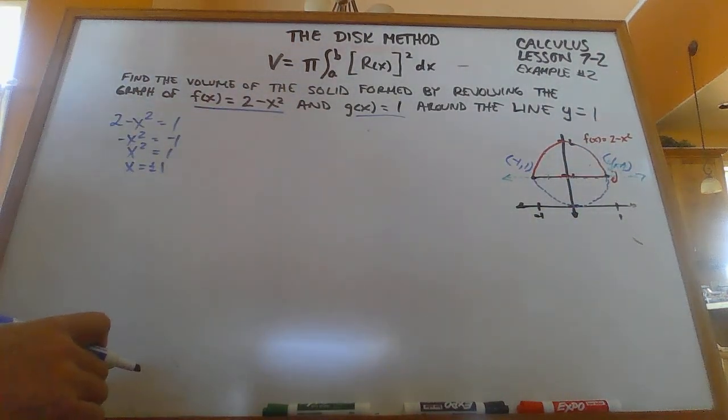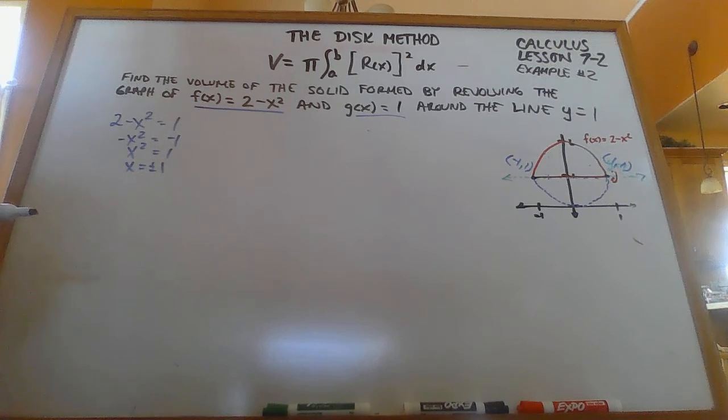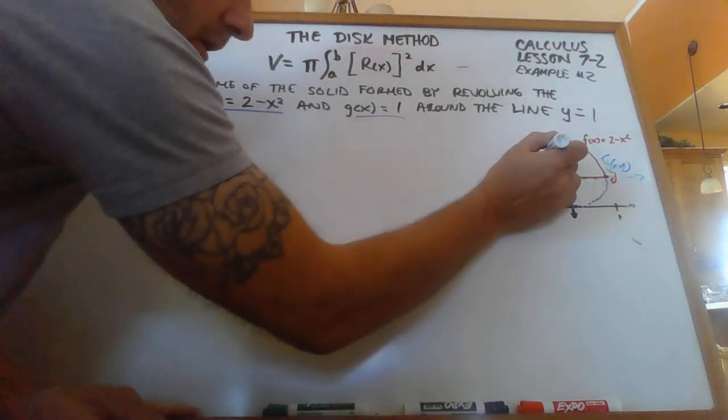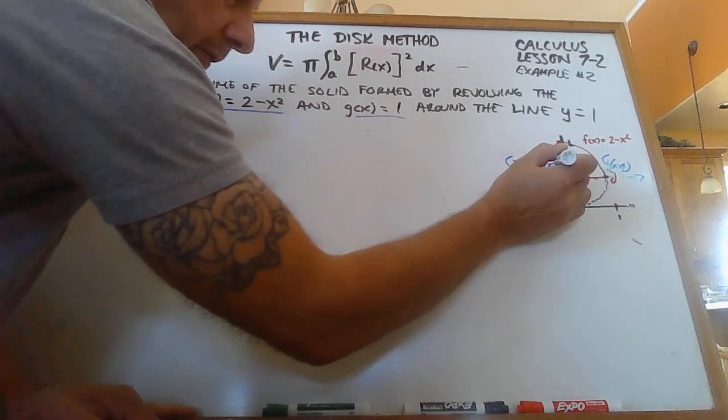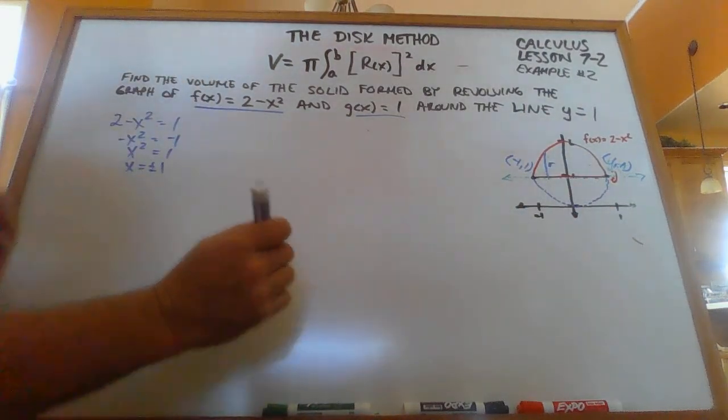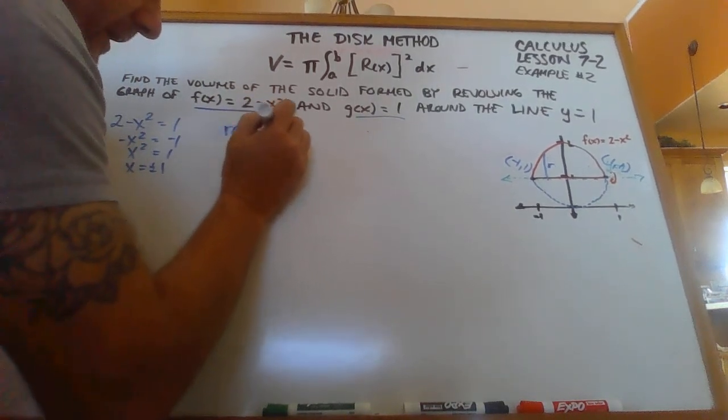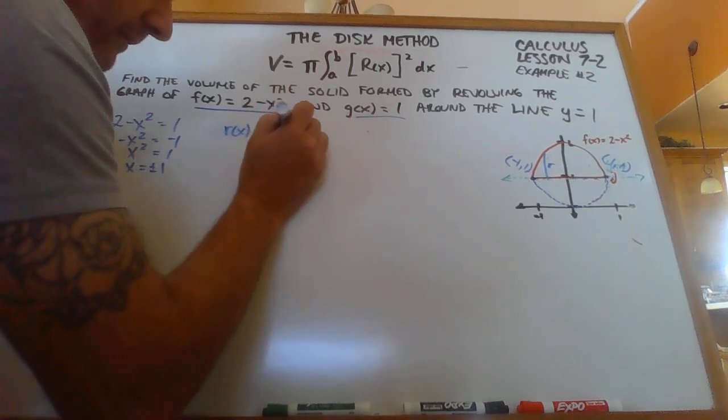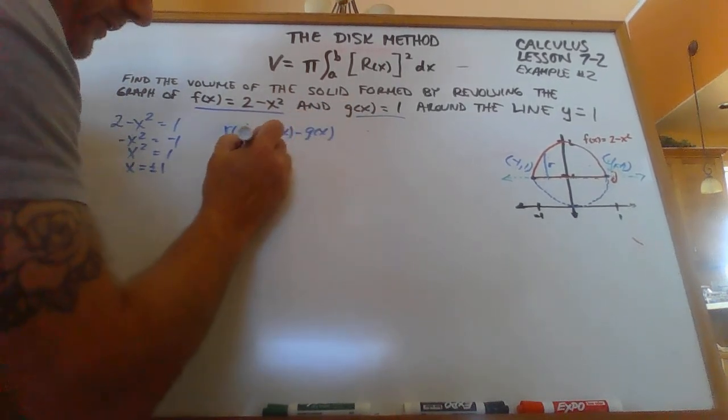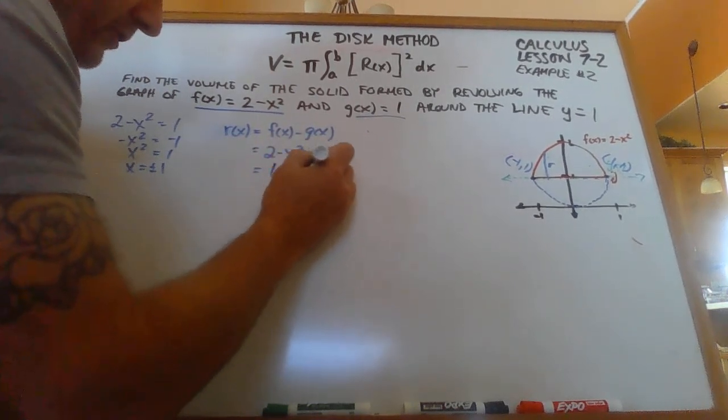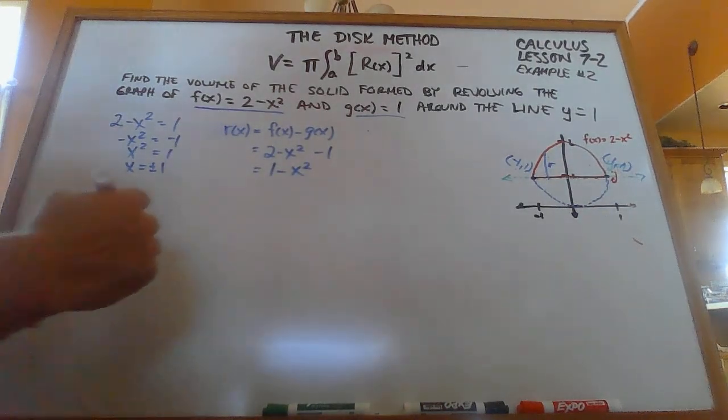Okay, so we got that out of the way. And next we need to figure out what our radius is going to be each time. So the radius is going to be, like right here, here's one of our radii. It's going to be f(x) minus g(x). So we'll call this r(x) is going to equal f(x) minus g(x). And so that's going to be 2 minus x squared minus 1, which ends up being 1 minus x squared. So there's our r(x) in the equation.